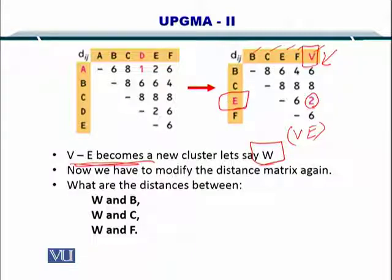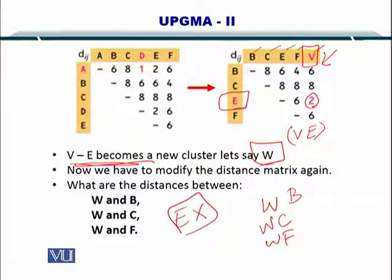Now we have to compute the distance between W and B, W and C, and W and F. Remember that E will be eliminated from the matrix and V will be eliminated from the matrix as well because they will be replaced by W.